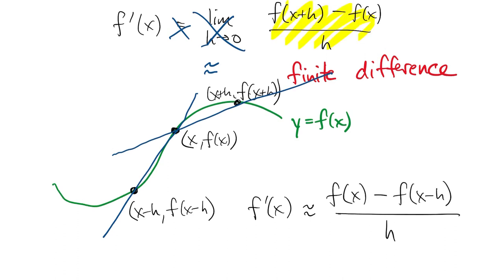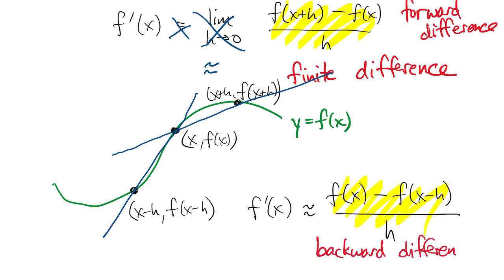The first one we call a forward difference, and the second one we call a backward difference. The distinction is whether we are looking ahead, looking forward, or backward relative to the point x.